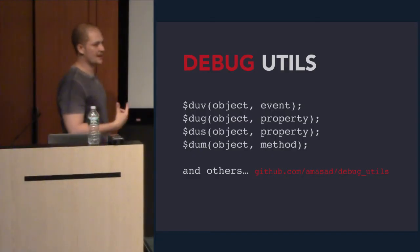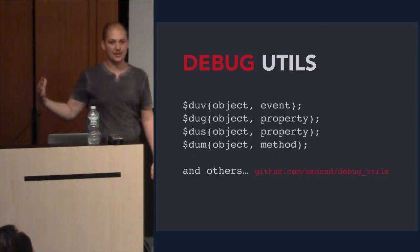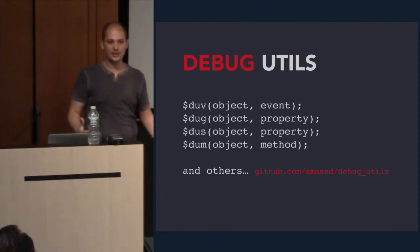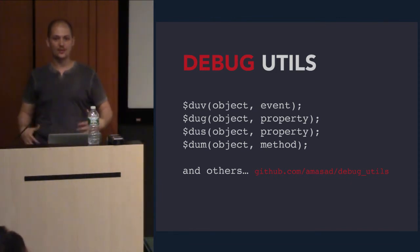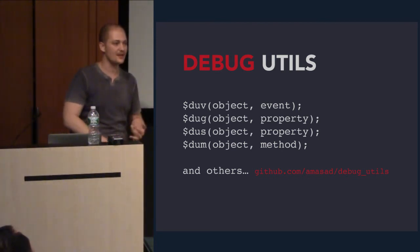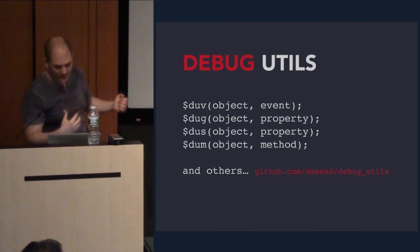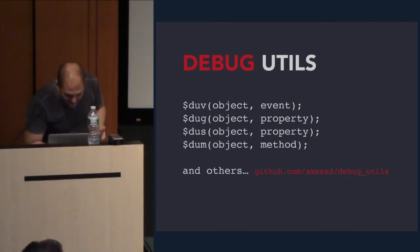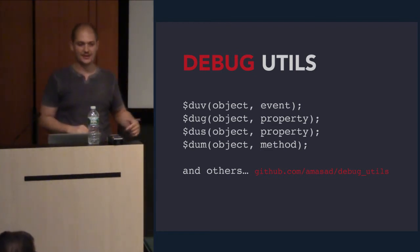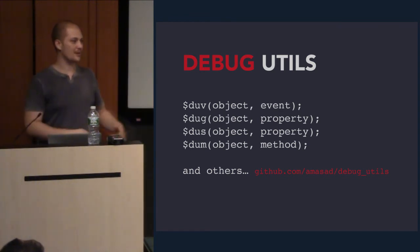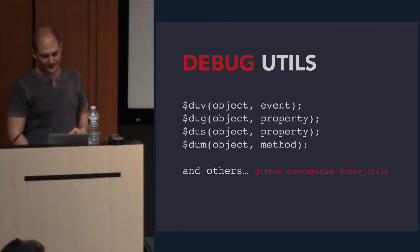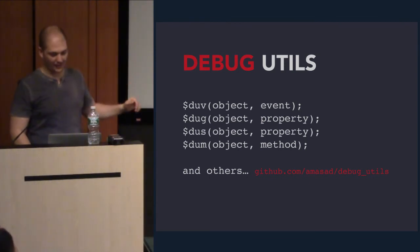debug-utils is a tool I built to capture everything I've told you about, and a lot more. It has all these tools to allow you to set breakpoints on setters, getters, events, methods, and a lot of other things. Just go to github.com/amasad/debug-utils. I really recommend it — it's awesome. I know I'm biased, but I think it's still awesome.